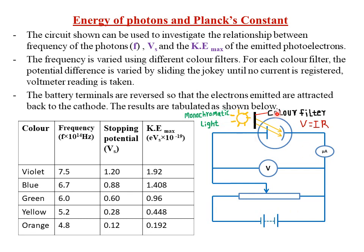We also have a color filter so that we can obtain different colors and identify their values of stopping potential. The frequency is varied using different color filters. For each color filter, the potential difference is varied by sliding the jockey until no current is registered, then the voltmeter reading is taken. When no current is registered, the voltmeter reading is what we call the stopping voltage or stopping potential.